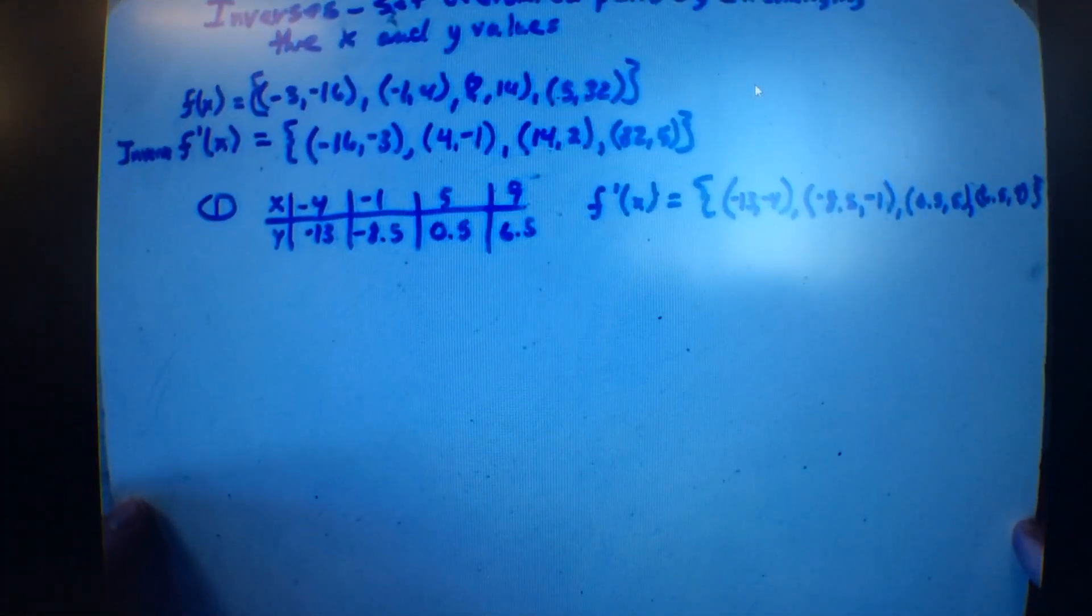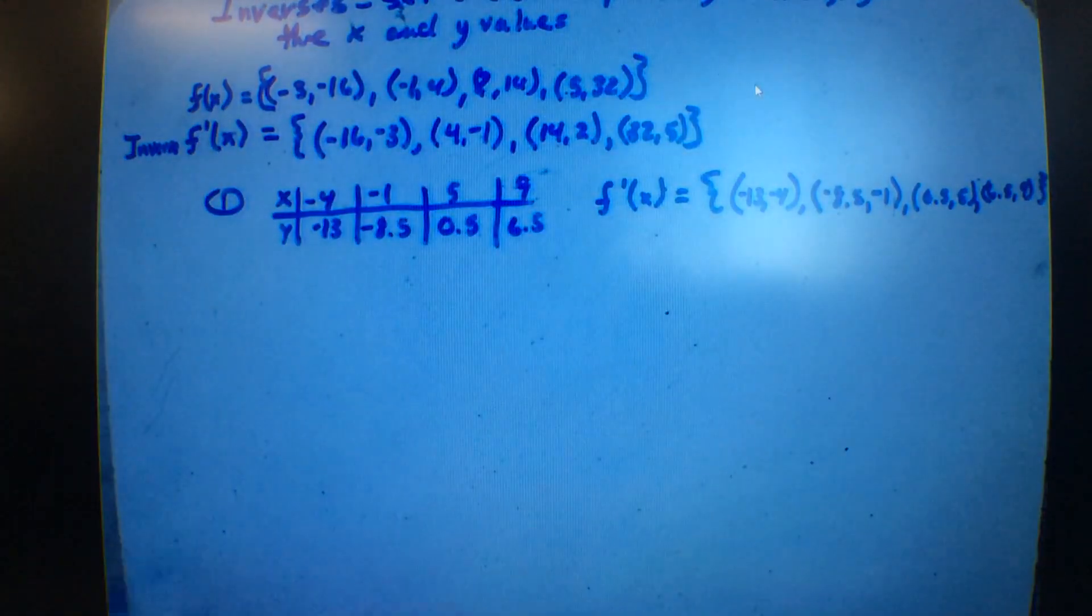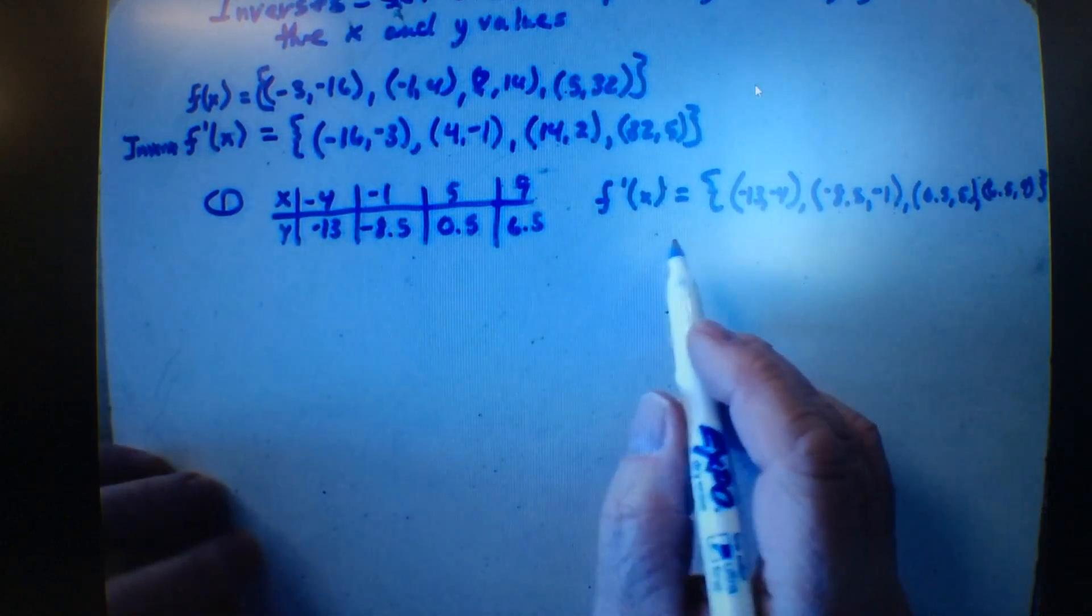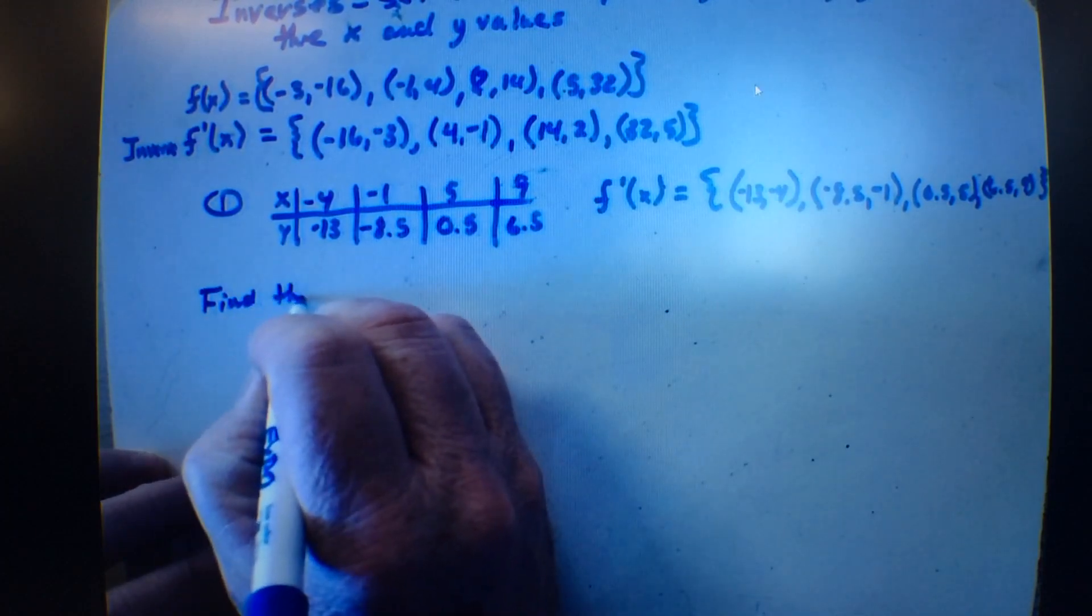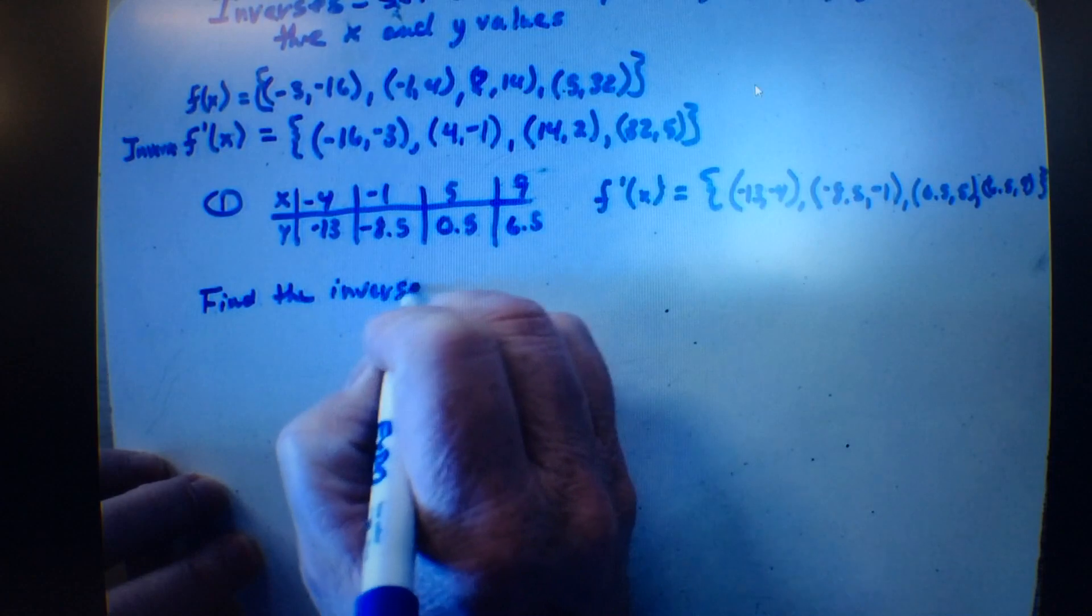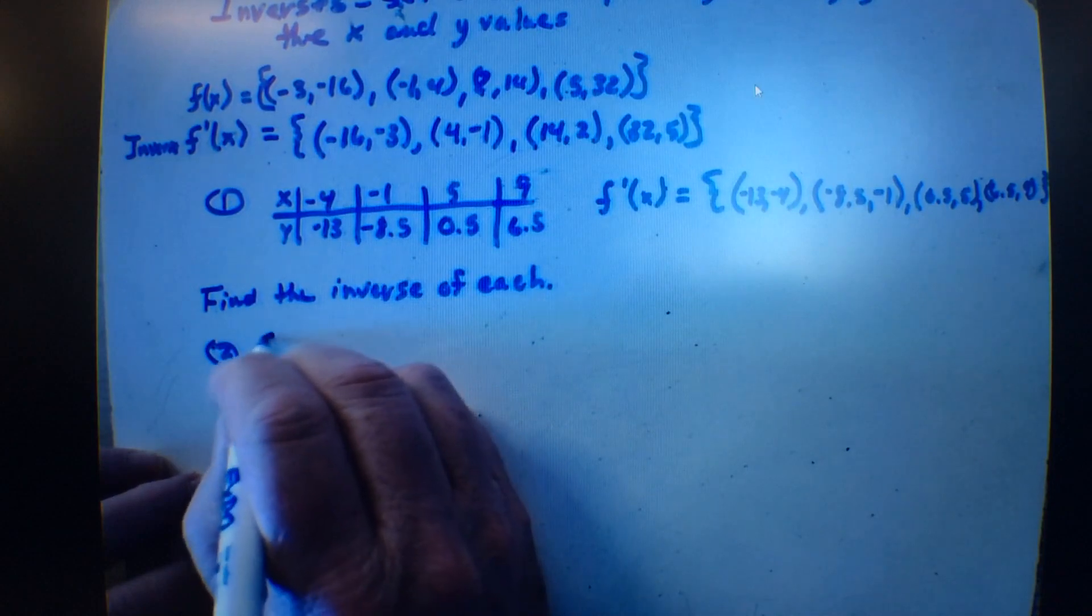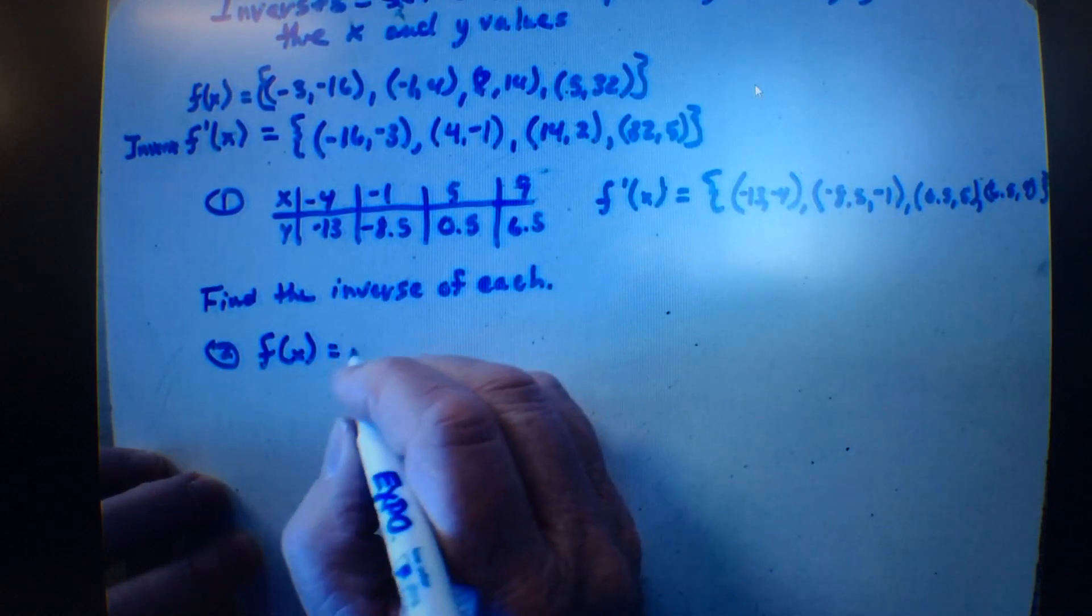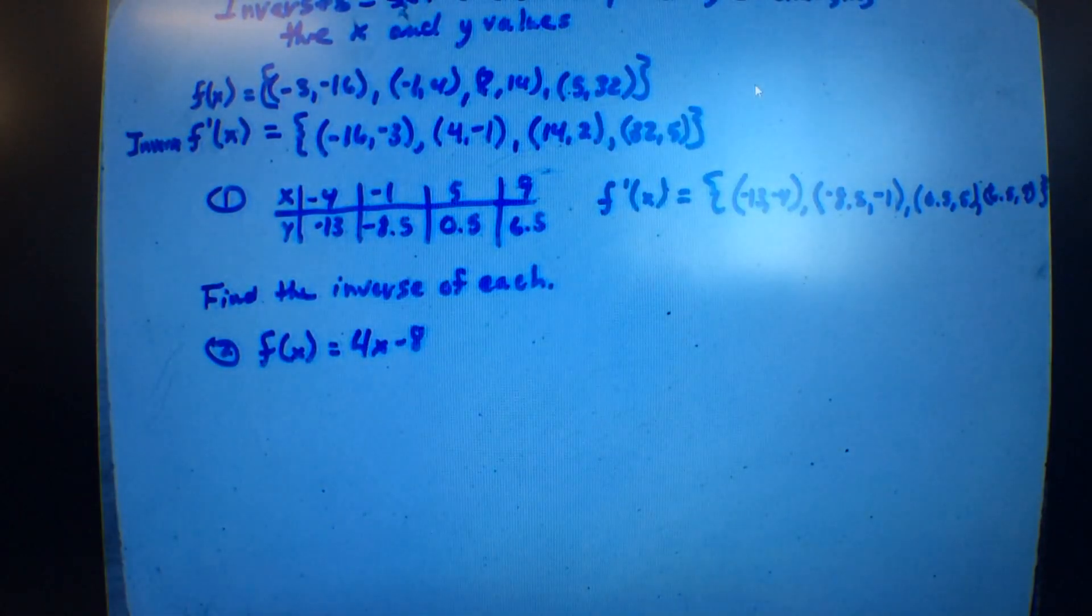So let's go back to our notes then on regular paper. And we have... I've already started the function thing. We have an inverse function. But what happens if I don't give you an ordered pair? And I say, okay, find the inverse of each. So basically, it's the same directions as before, only I'm going to give you something like this. F of x equals 4x minus 8. All right? So it's a function written in equation form.